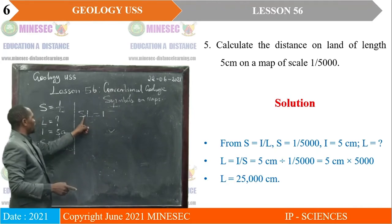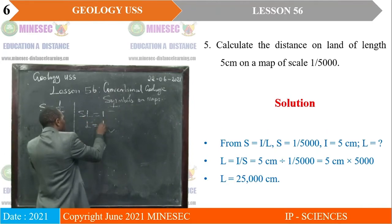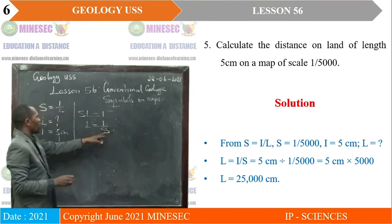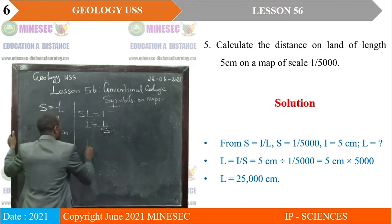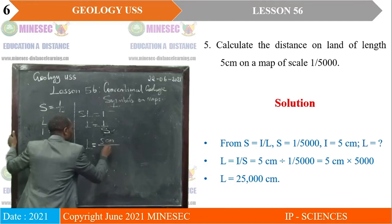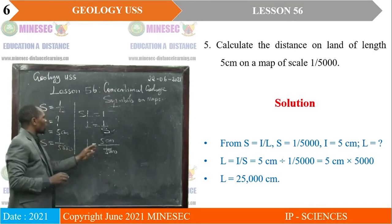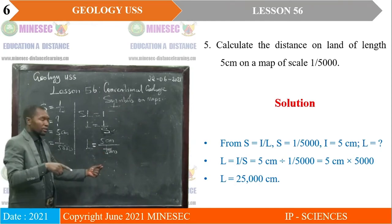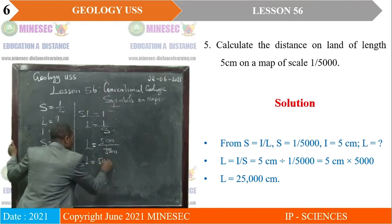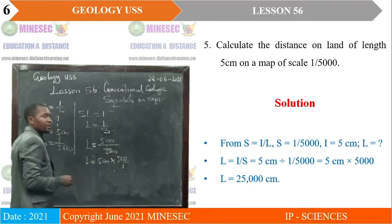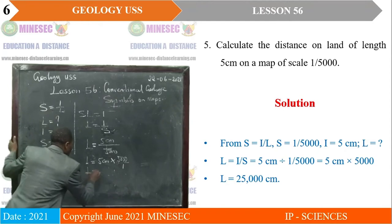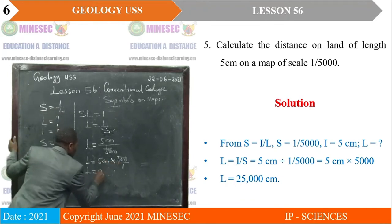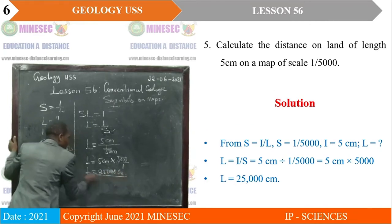Therefore, L = 5 centimeters divided by (1 over 5,000). Dividing by a fraction means we invert and multiply: L = 5 centimeters × 5,000 over 1. So L = 5 × 5,000 = 25,000 centimeters. That is the distance on land, and it must have units because we are talking about distance.